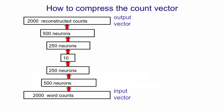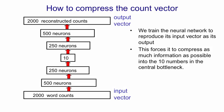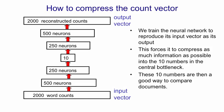Here's how we do the reduction. We take a deep autoencoder and compress the 2,000 word counts down to 10 real numbers, from which we can reconstruct the 2,000 word counts, although we can't reconstruct them very well. We train the neural network to reproduce its input vector at its output vector as well as possible, and that forces it to put as much information about the input into those 10 numbers as possible. We can then compare documents using just 10 numbers, which is going to be much faster.